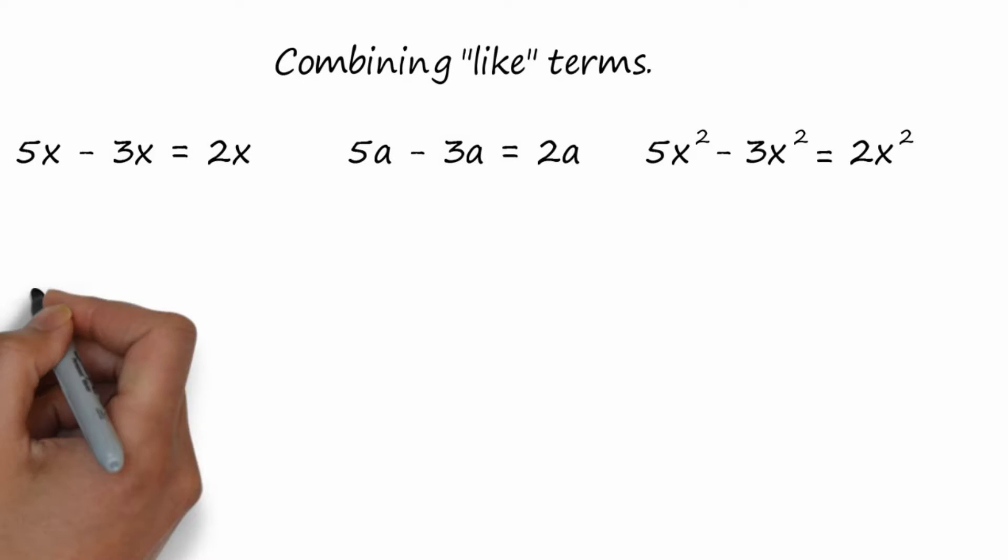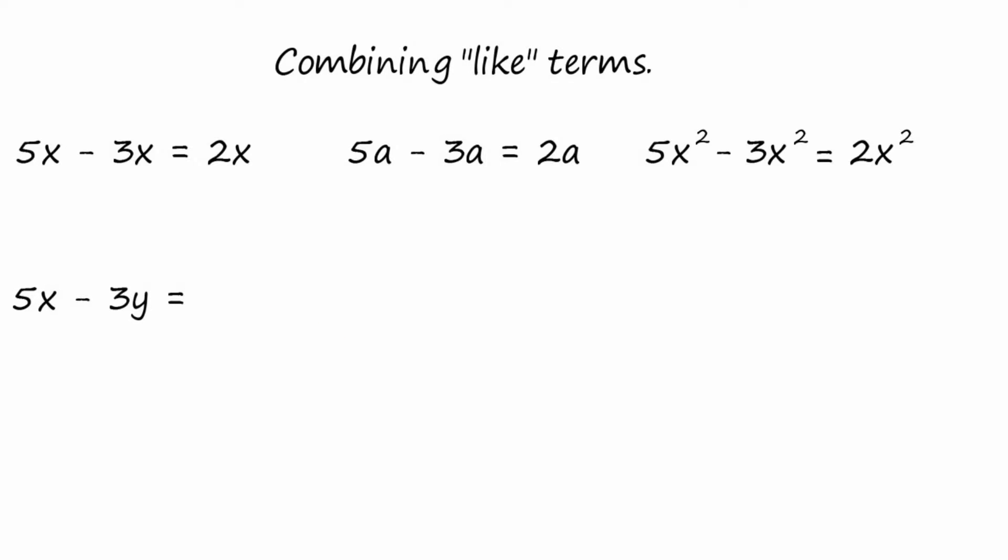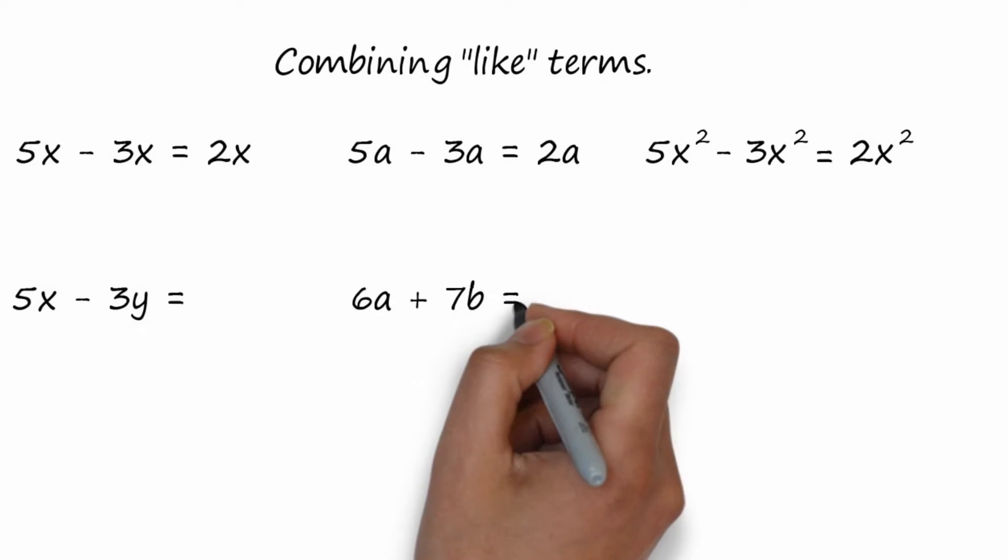But if we had 5x and we tried to subtract 3y, we couldn't do it. They're not the same. Or 6a + 7b can't be combined because they're not the same.